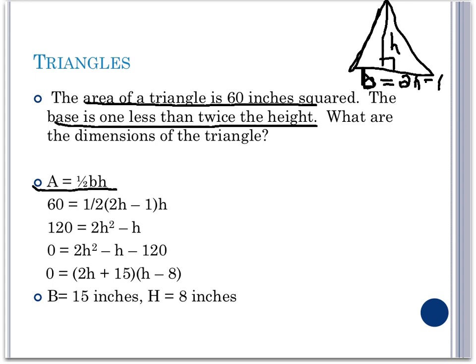Therefore, we can come up with the equation that our area of 60 is equal to one half times our base, which is 2h minus 1, times our height.